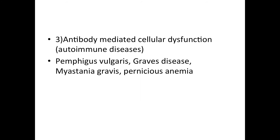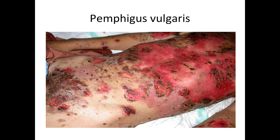The final category is antibody-mediated cellular dysfunction, which encompasses autoimmune diseases. The first is Pemphigus vulgaris, in which an antibody blocks the desmosomes that connect epithelial cells. By blocking them, blister formation occurs throughout the body, as seen in the picture where numerous blisters are present all over the body.